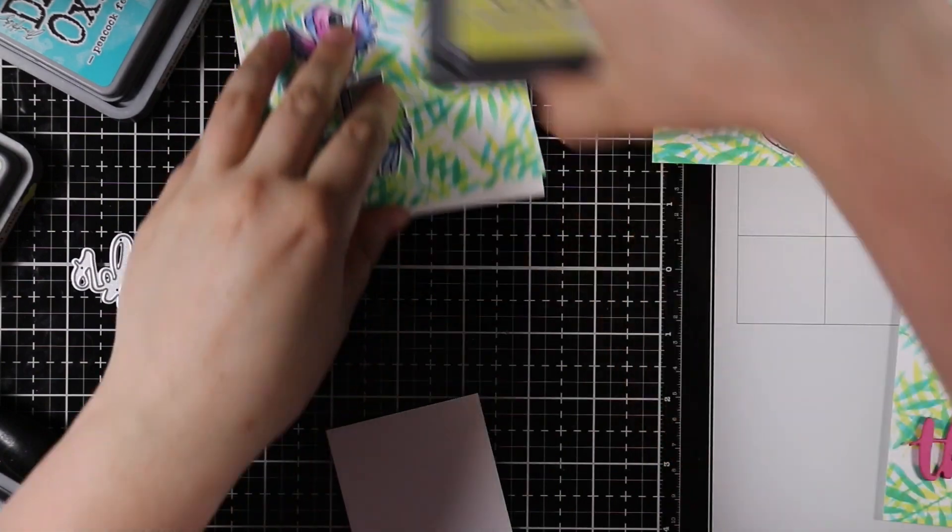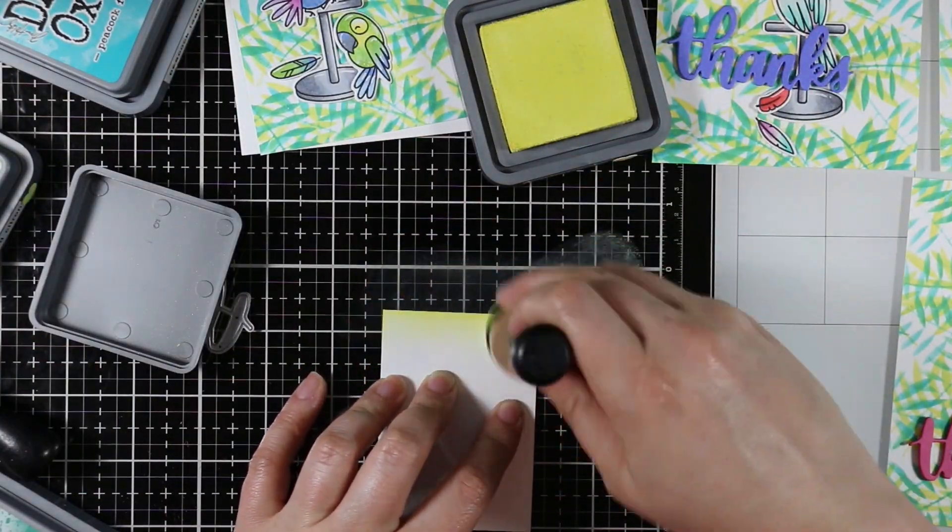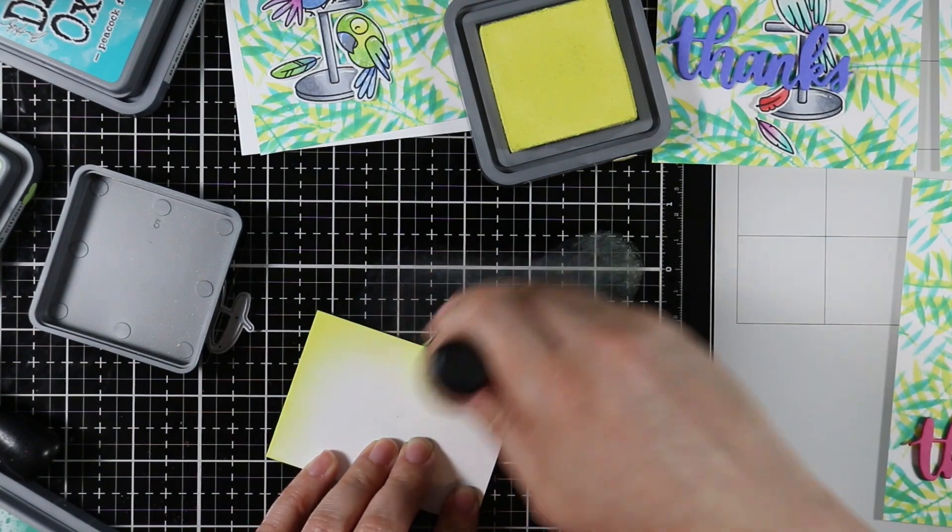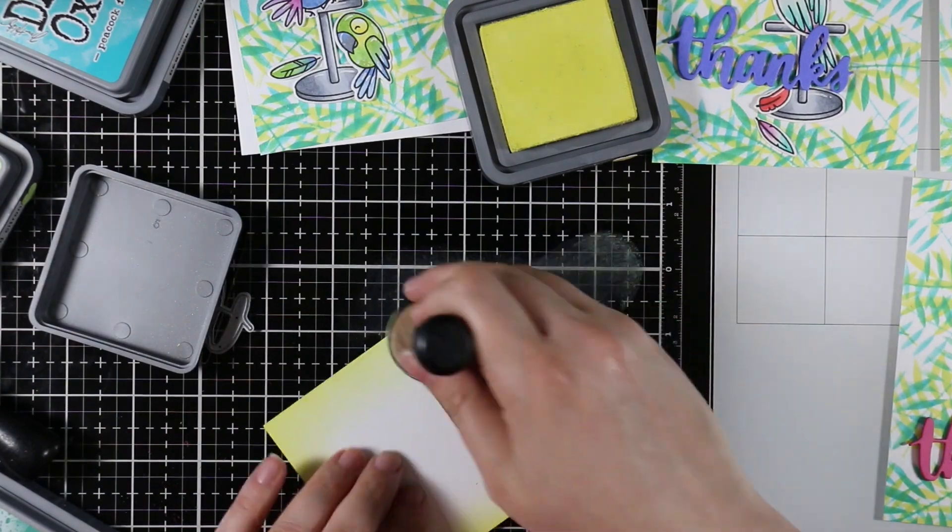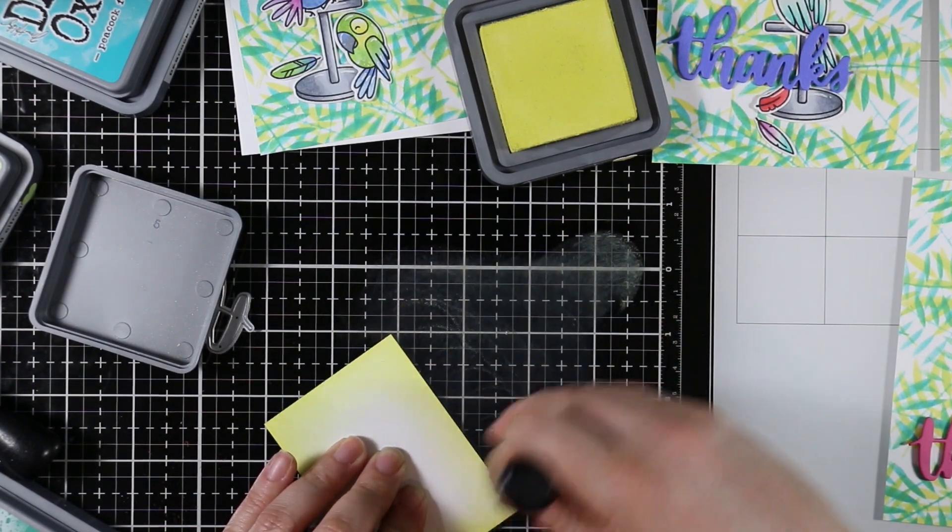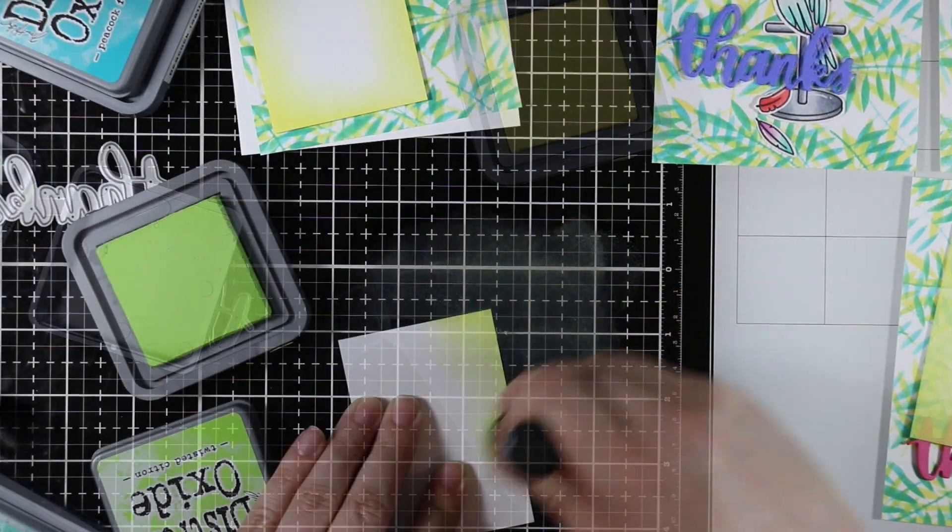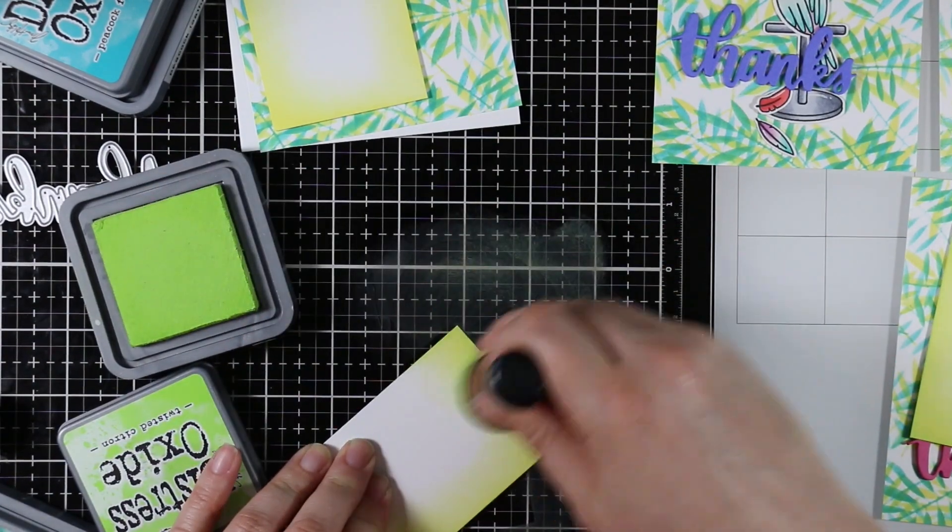I had laid out my little birds and everything and I realized my background was pretty busy with all those leaves so I wanted the images to stand out a little bit. So I just cut down some more white cardstock into rectangles.